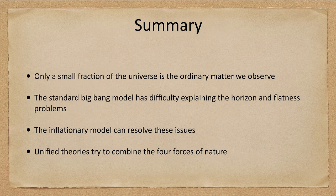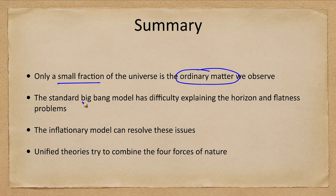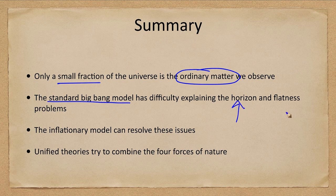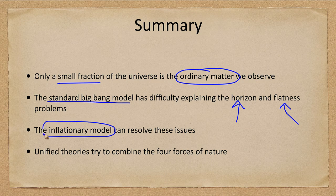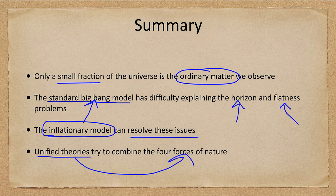Let's finish up with our summary. What we looked at is that only a tiny fraction of the universe is the ordinary matter that we have studied in most of this course. The standard Big Bang model has difficulty explaining the horizon and flatness problems. The inflationary model helps us to resolve these issues. So put the inflationary model with the Big Bang and we're able to resolve these issues. And unified theories continue work on trying to combine the four forces of nature.